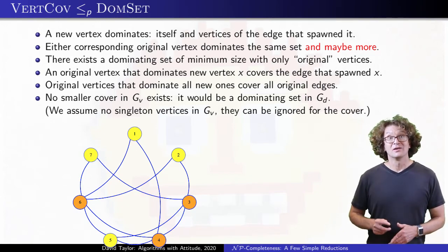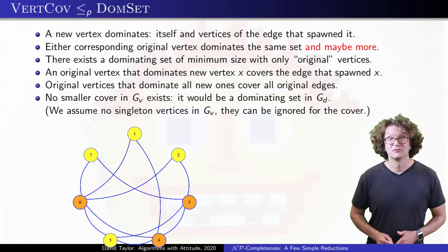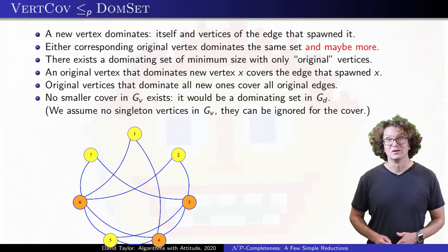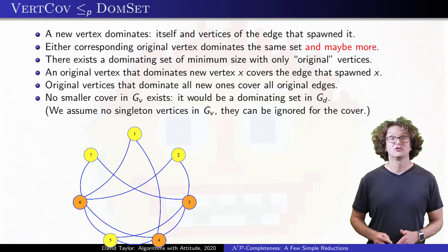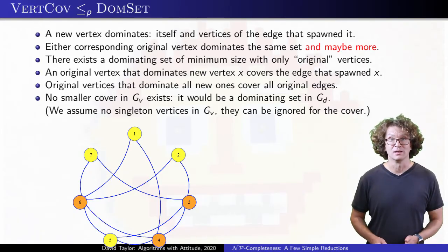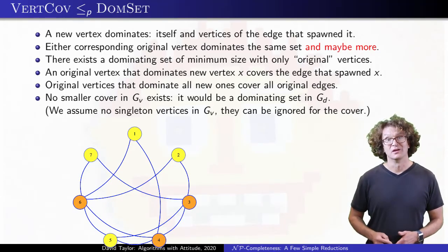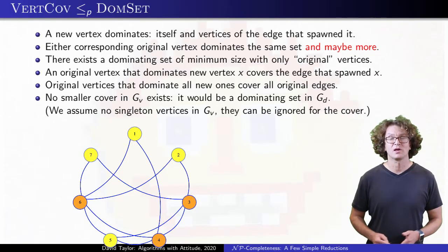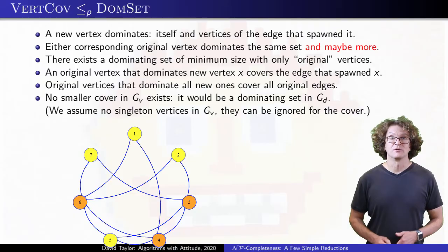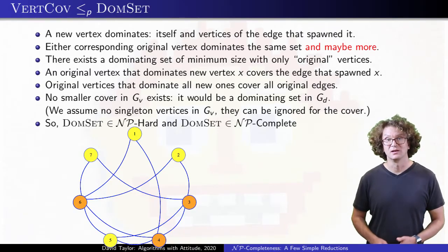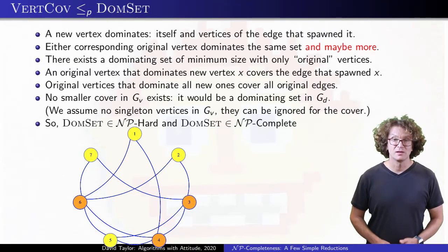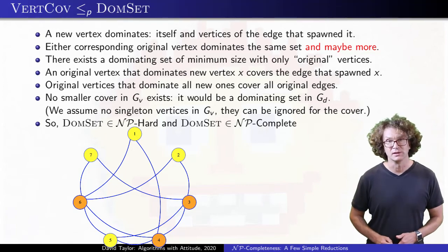One technicality: I assume there aren't any singleton vertices with no edges in the original graph. Those vertices can be ignored in the vertex cover graph — they don't cover anything, so we shouldn't include them in our dominating set graph. A singleton in a dominating set instance must be in the solution, since nothing else dominates it. Anyway, that gives a reduction from vertex cover to dominating set, so dominating set is NP-hard and NP-complete.